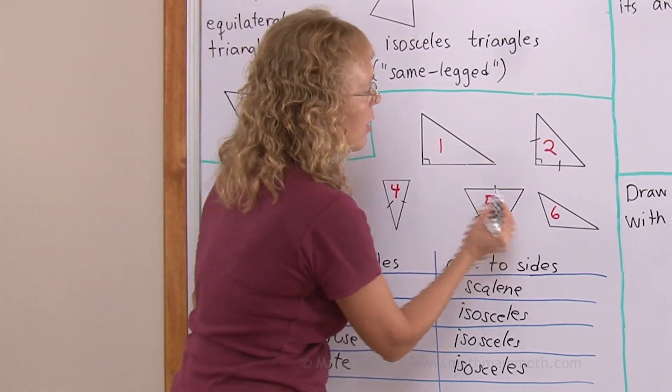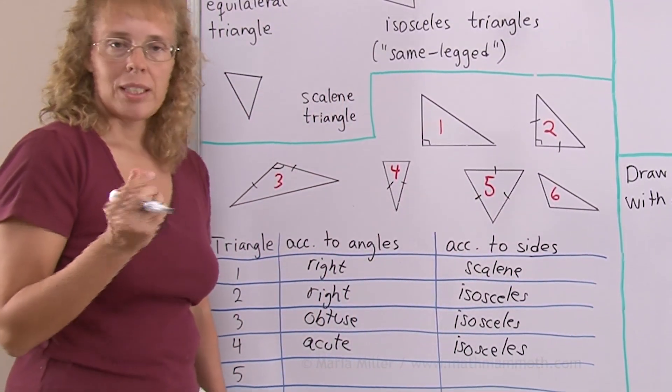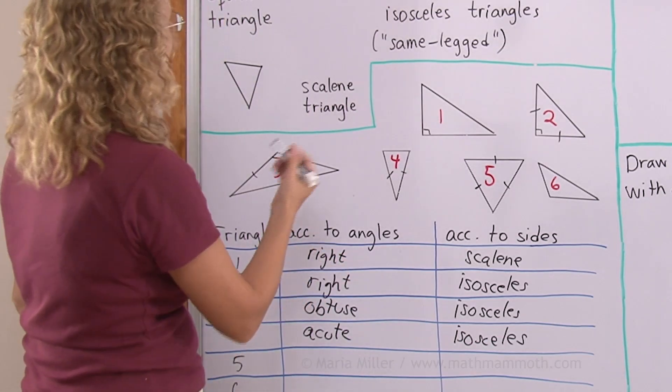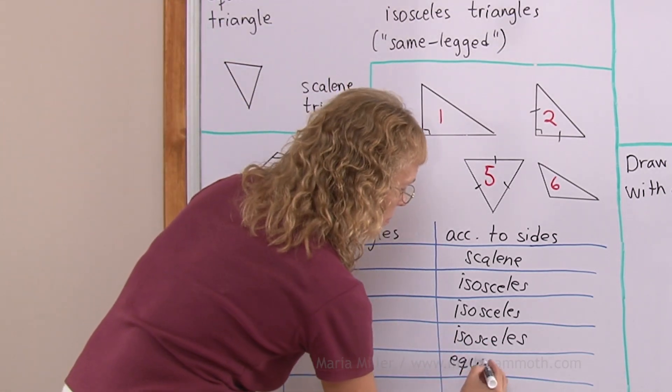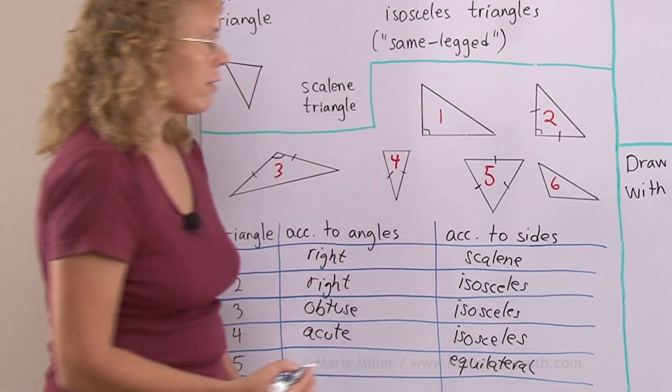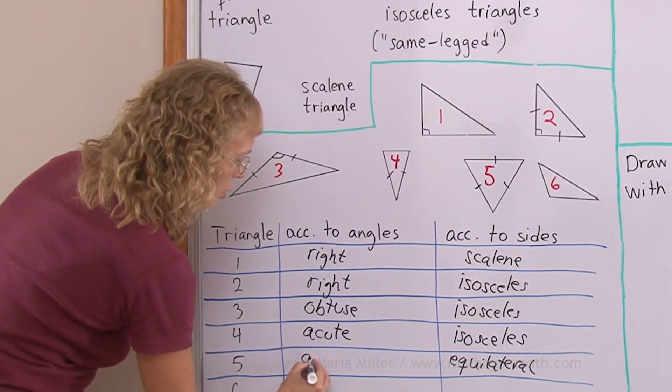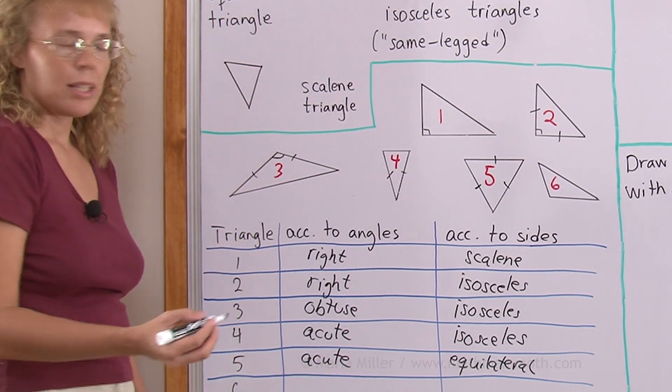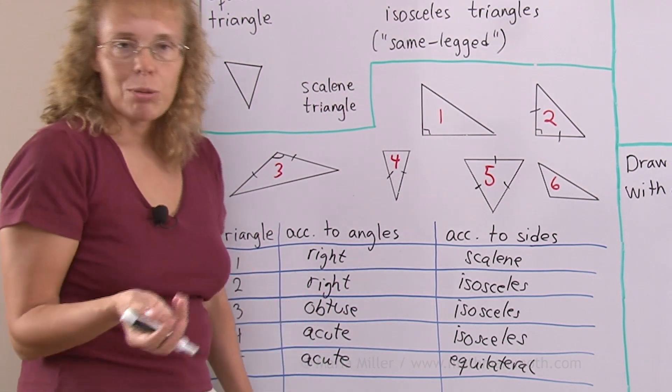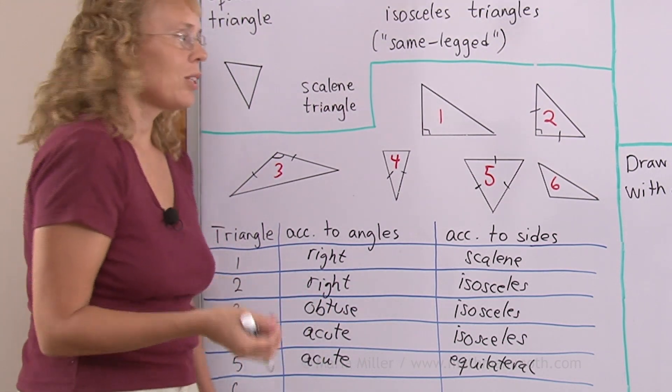Number five. All of its sides are marked being congruent. So it is equilateral. And all of its angles are acute. It's an acute triangle. Acute equilateral triangle. Now all equilateral triangles are always acute anyway.